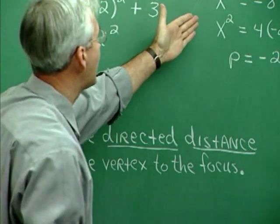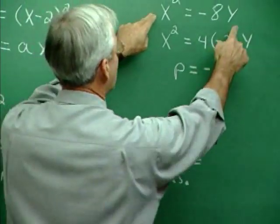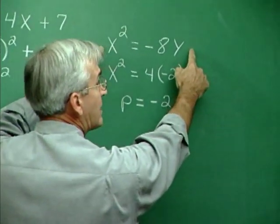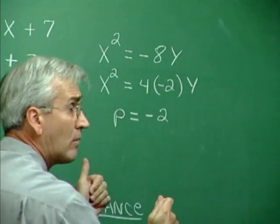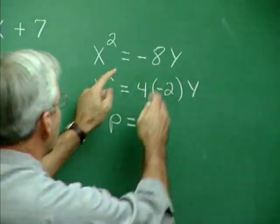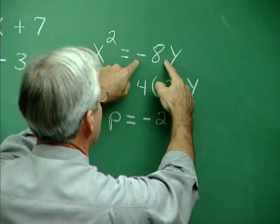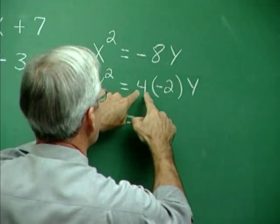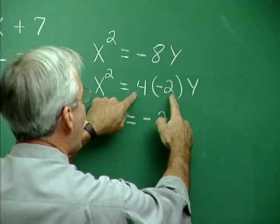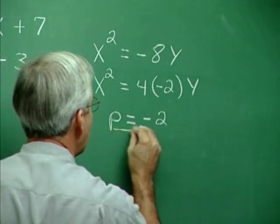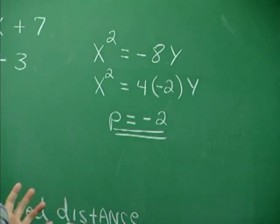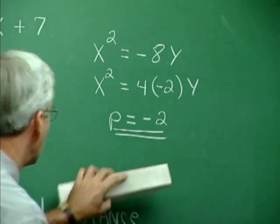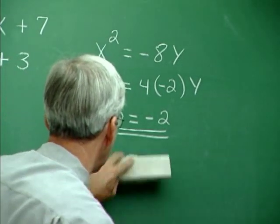So if we're faced with a problem like this - x squared is equal to minus 8y - you see, then what we would do, we want it into the 4py form, so we force the factorization of 4 out of this minus 8. So we write minus 8 as 4 times negative 2, and now the p value can be identified as negative 2. All right, if the p value is negative 2, then we can pretty easily construct the graph, and it works like this.